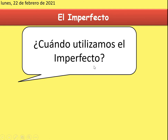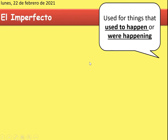El imperfecto — ¿Cuándo utilizamos el imperfecto? When do we use the imperfect tense? Hopefully you remember that we use it to describe things that used to be or were happening. For example: when I was younger, I used to play outside instead of watching TV, or I used to not have a mobile phone. When we have 'used to' or 'was', that is the imperfect tense — not the preterite past tense.